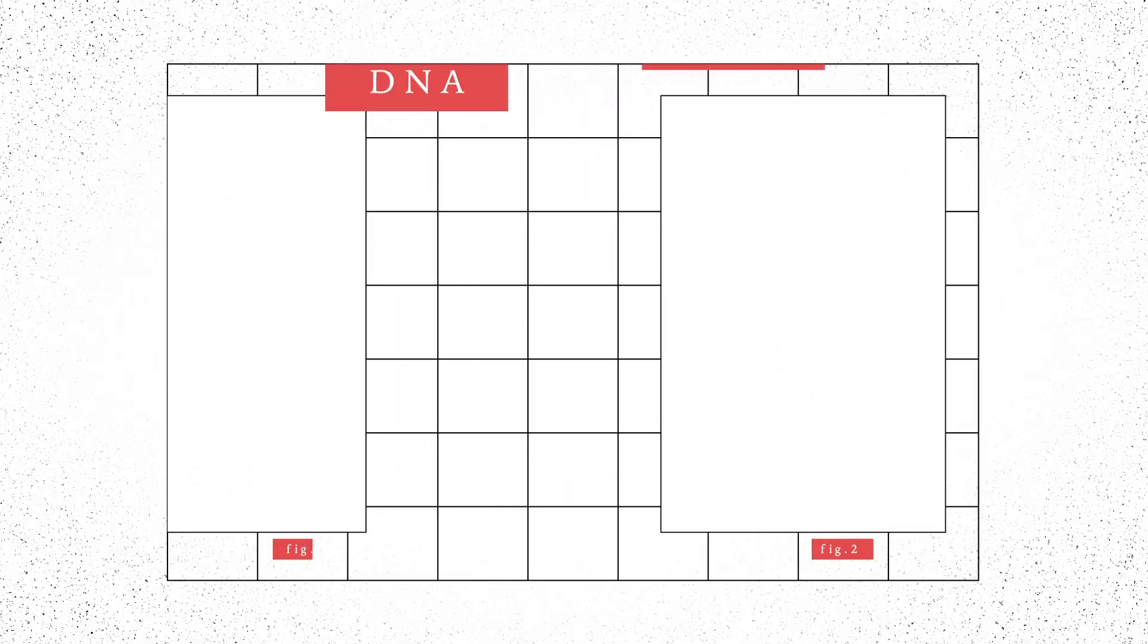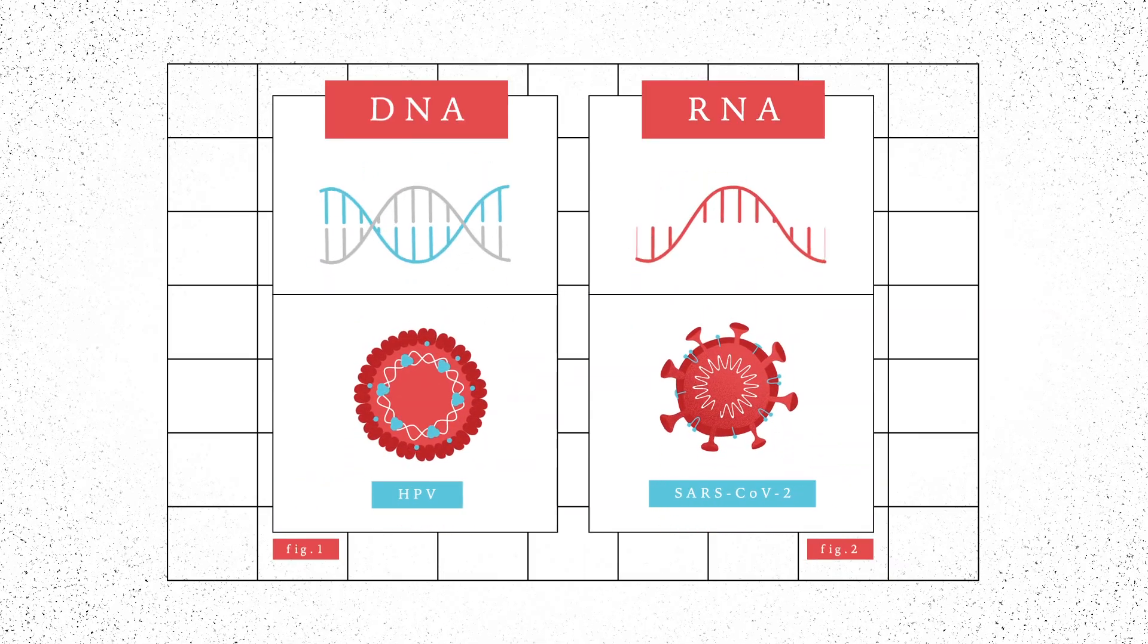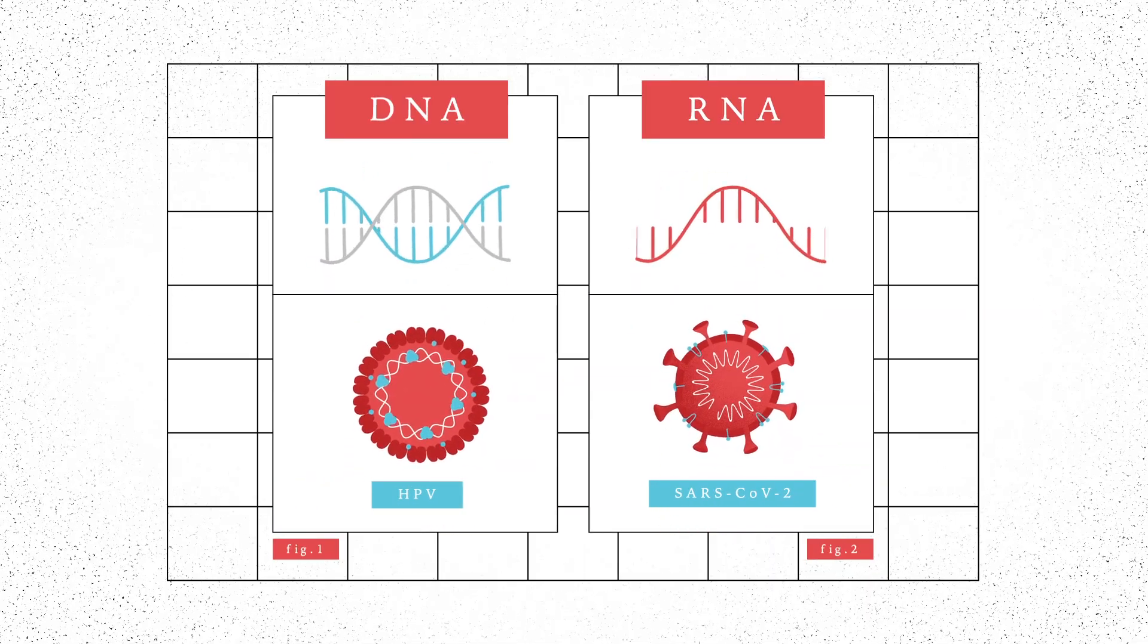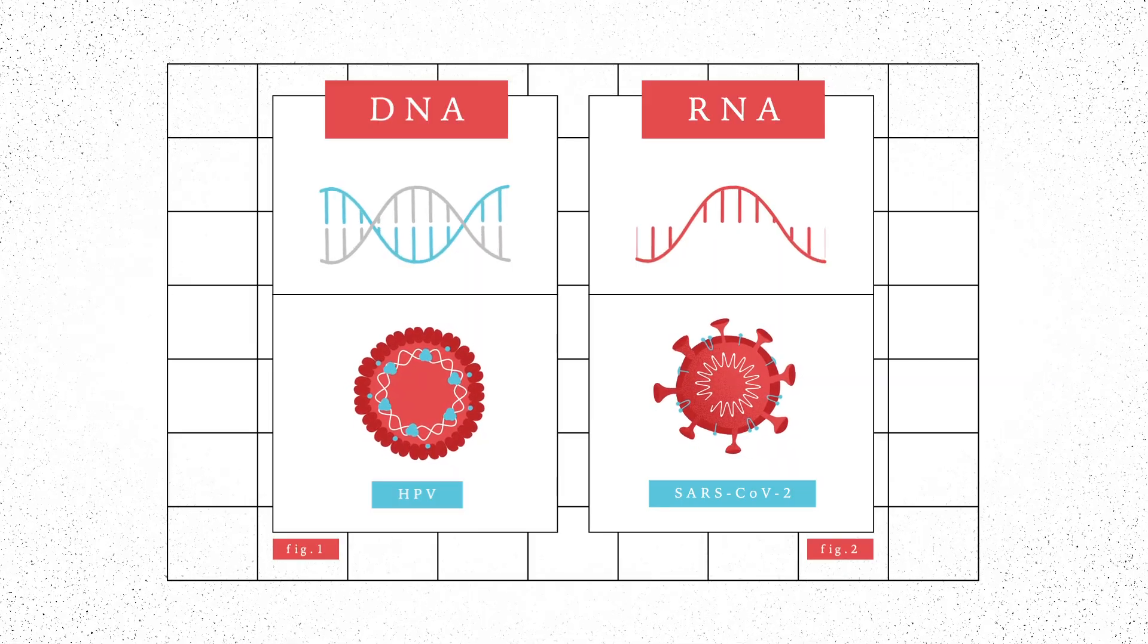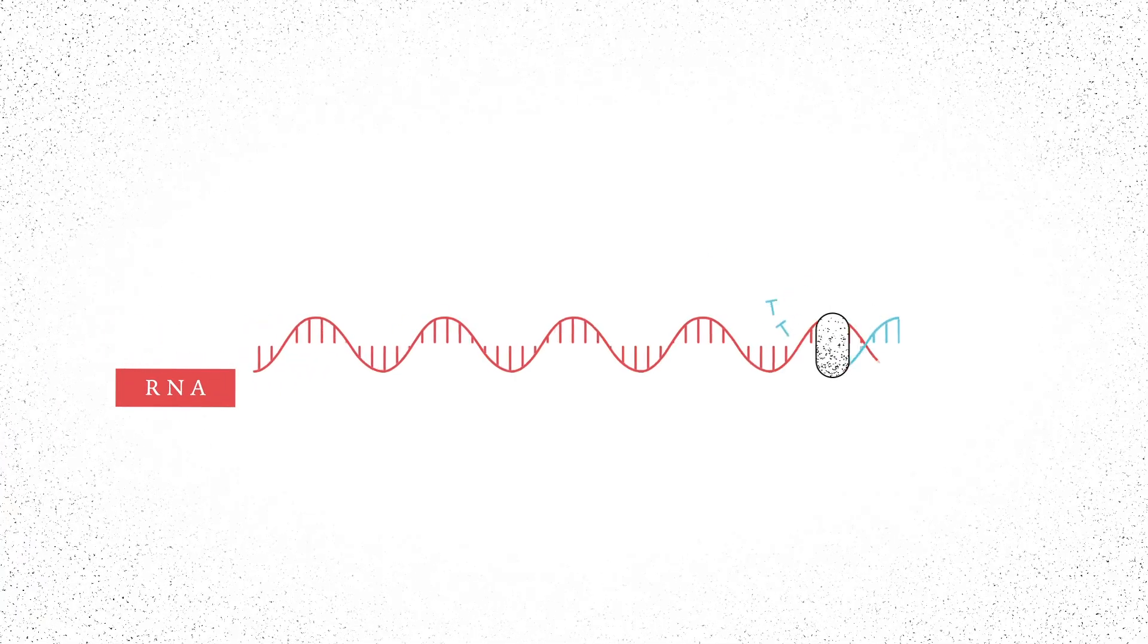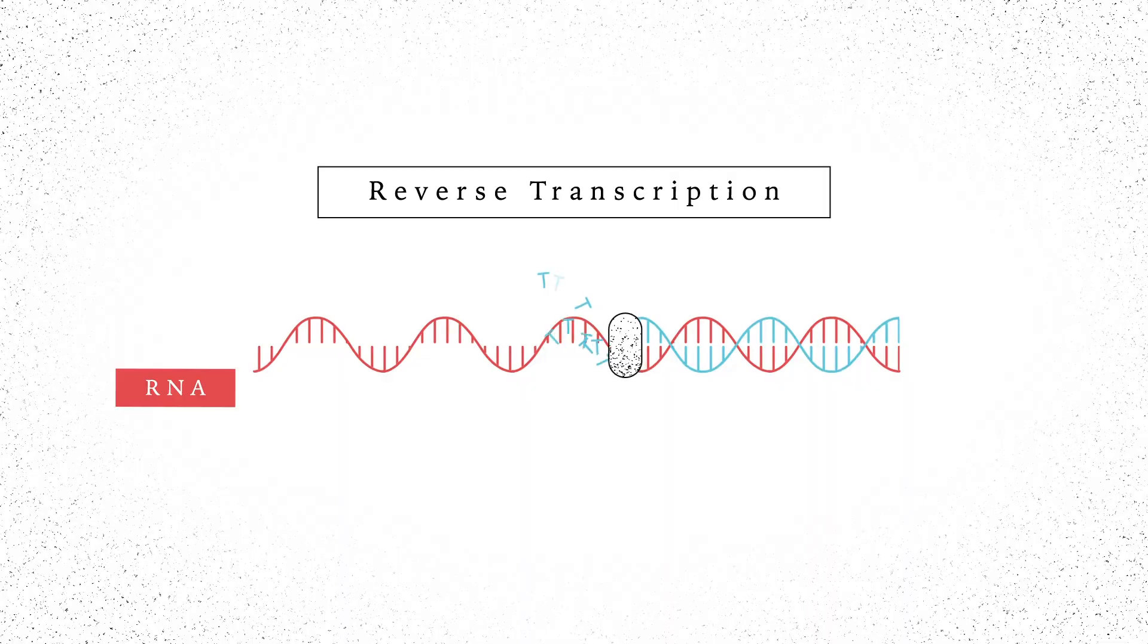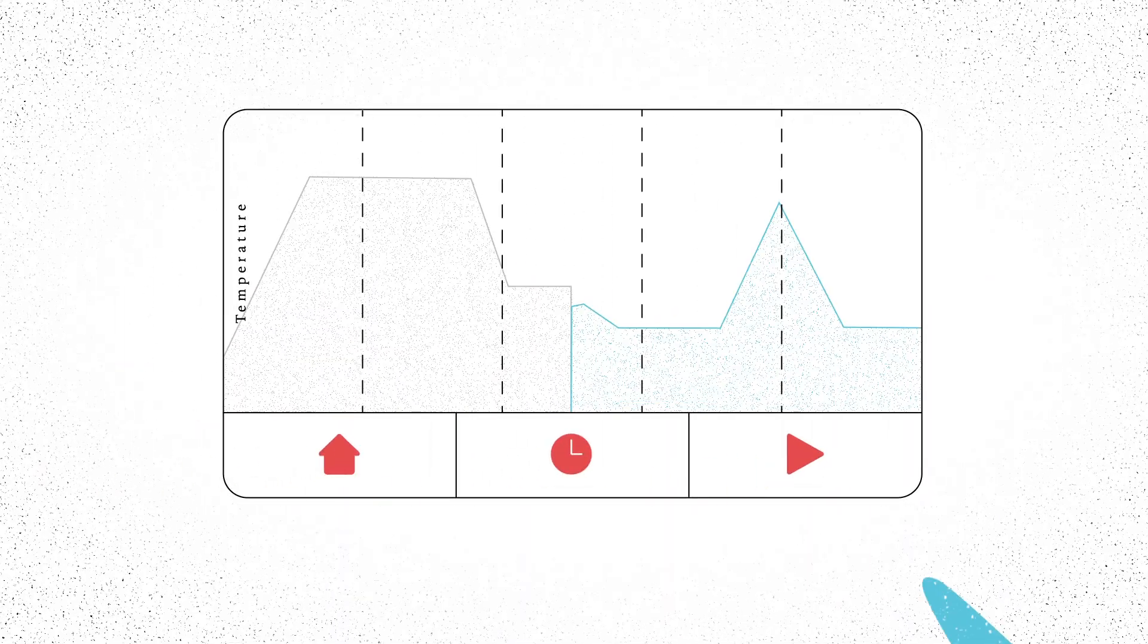Genetic information can be encoded via DNA or RNA. HPV, for example, uses DNA, while SARS-CoV-2, the cause of COVID-19, uses RNA. Before running the PCR, the viral RNA, if present, must be reverse transcribed to make a strand of complementary DNA. Researchers then run the PCR.